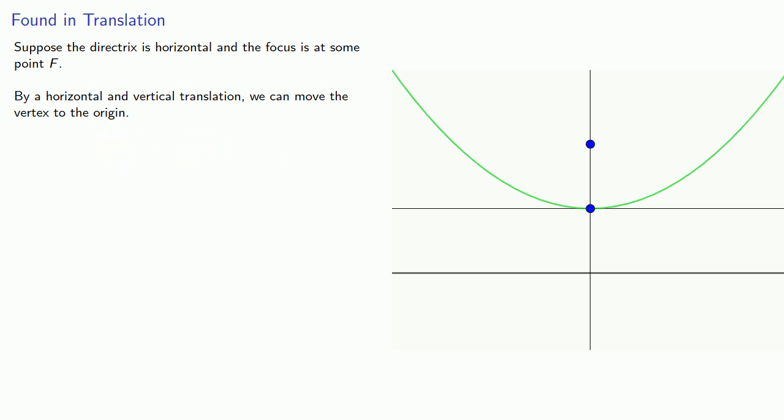And at that point, the focus will be at some location (0, p), that's p units above the vertex, and the directrix will be the line y equals negative p, that's p units below.